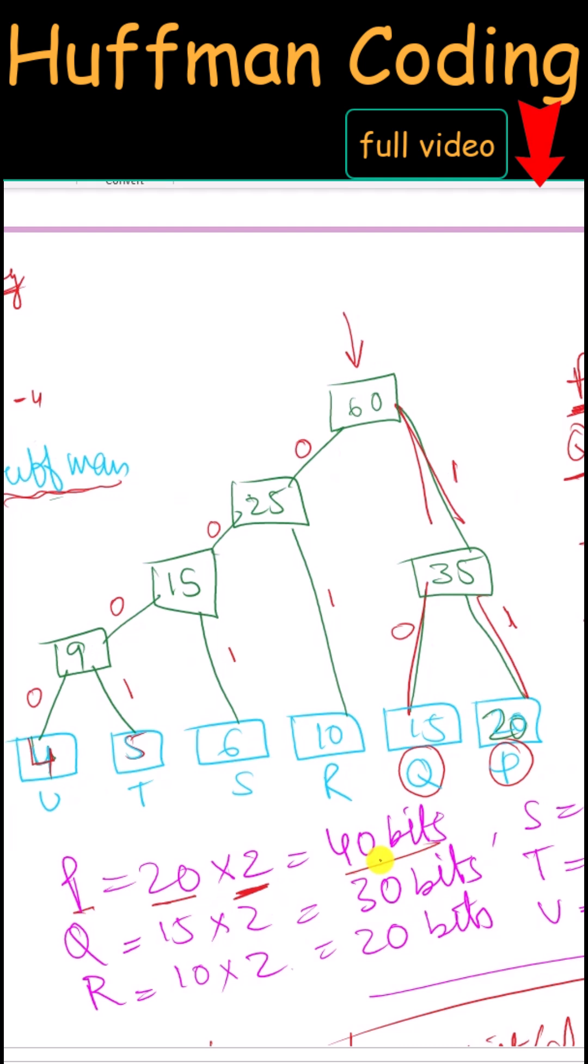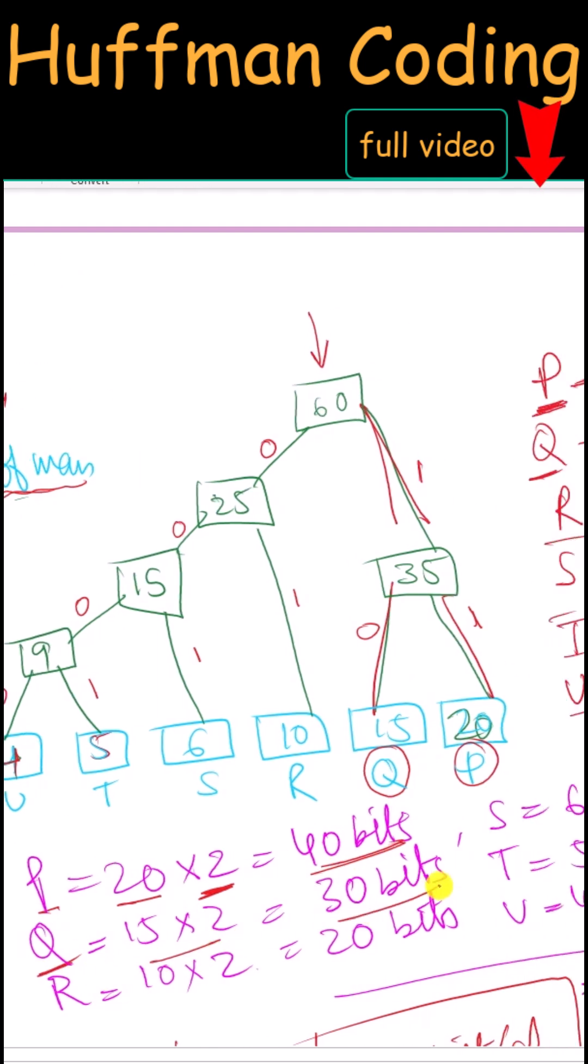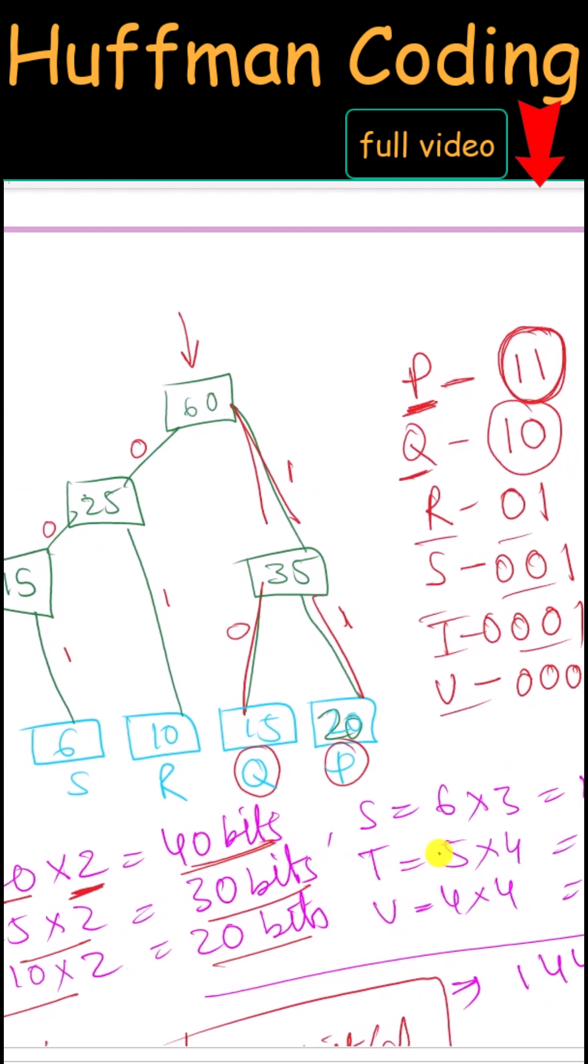It will take a total of 40 bits. Similarly, Q will take a total of 30 bits. This way if we calculate...